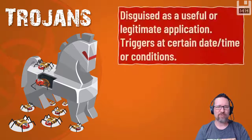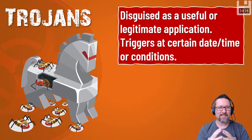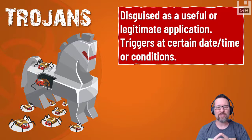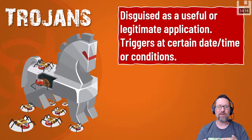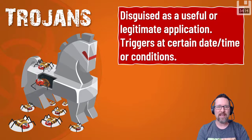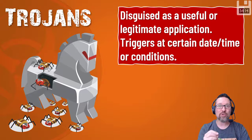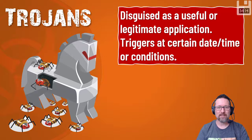In the middle of the night all the soldiers climbed out of the horse and defeated the city from inside. That is what a Trojan virus does — it's disguised as a legitimate application and triggers at a certain date and time or when certain conditions are met, and then it pretty much kills your computer. It looks like a cool screen saver, but it's also got the soldiers hidden inside waiting for the right moment to take over your machine.